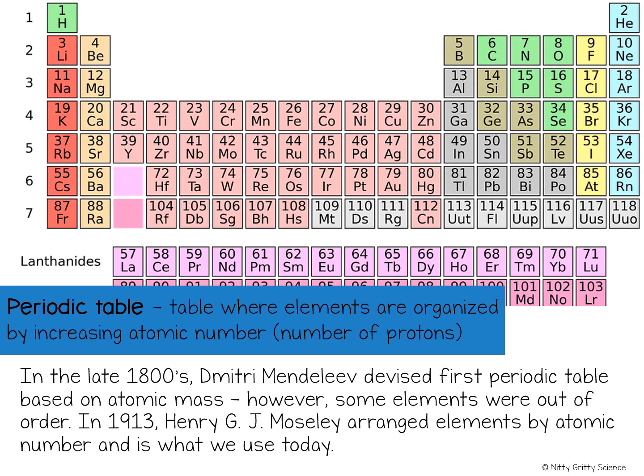This arrangement is called the periodic table of elements. The periodic table has the elements arranged by increasing atomic number and by the changes in physical and chemical properties.